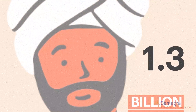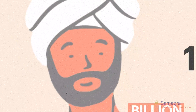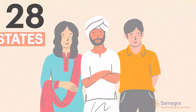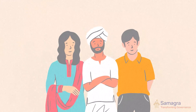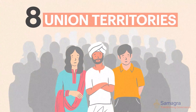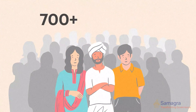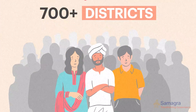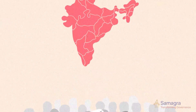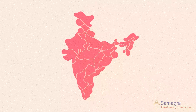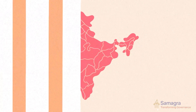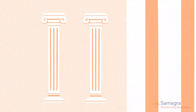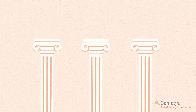To manage 1.3 billion people, 28 states, 8 union territories, 700 plus districts and multiple governance challenges, India relies on three pillars of democracy.